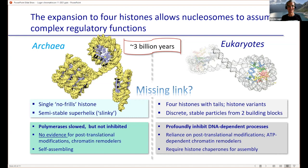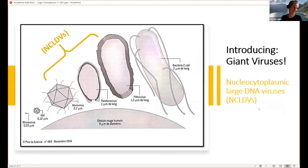How do we get from archaeal to eukaryotic chromatin? Even in Giardia, it has everything that we have — there's nothing primitive about Giardia as far as chromatin goes. So what is the missing link? In our search, we stumbled on these really fascinating organisms called giant viruses, or nucleocytoplasmic large DNA viruses, NCLDVs.